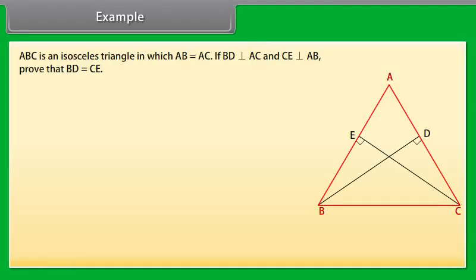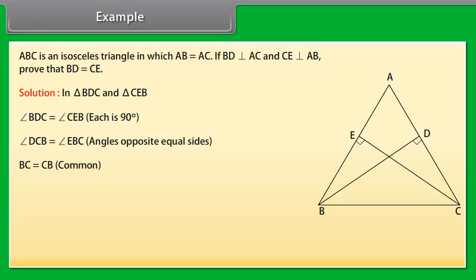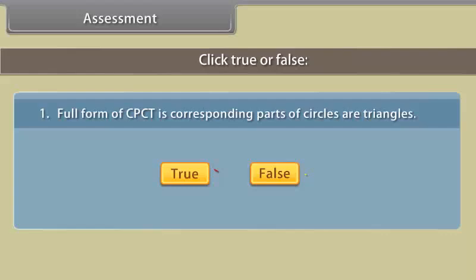ABC is an isosceles triangle in which AB is equal to AC. If BD is perpendicular on AC and CE is perpendicular on AB, prove that BD is equal to CE. Solution: In triangle BDC and triangle CEB, angle BDC is equal to angle CEB because each angle is 90 degrees. Angle DCB is equal to angle EBC because angles opposite equal sides of a triangle are equal. And BC is equal to CB because they are common. Therefore, triangle BDC is congruent to triangle CEB by AAS. Hence, BD is equal to CE. This gives us the result: perpendiculars drawn to equal sides from opposite vertices, or altitudes of an isosceles triangle, are equal.